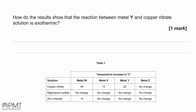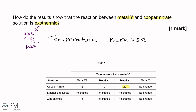How do the results show that the reaction between metal Y and copper nitrate solution is exothermic? The reaction between metal Y and copper nitrate refers to the 29°C temperature increase in table 1. The answer is simply that there is a temperature increase — therefore the reaction is exothermic, because exothermic reactions give off heat.